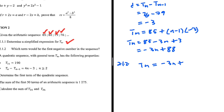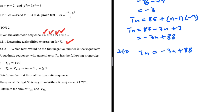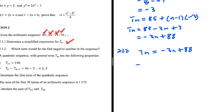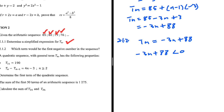We know tn = -3n + 88. For the first negative term, we need -3n + 88 < 0. Solving this will give us the value of n for which terms become negative.